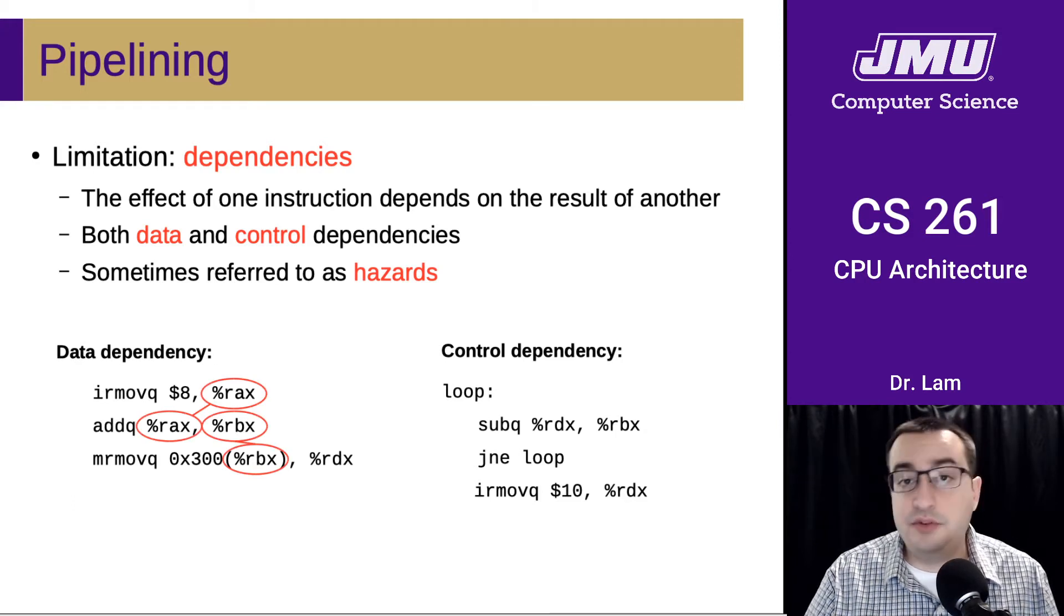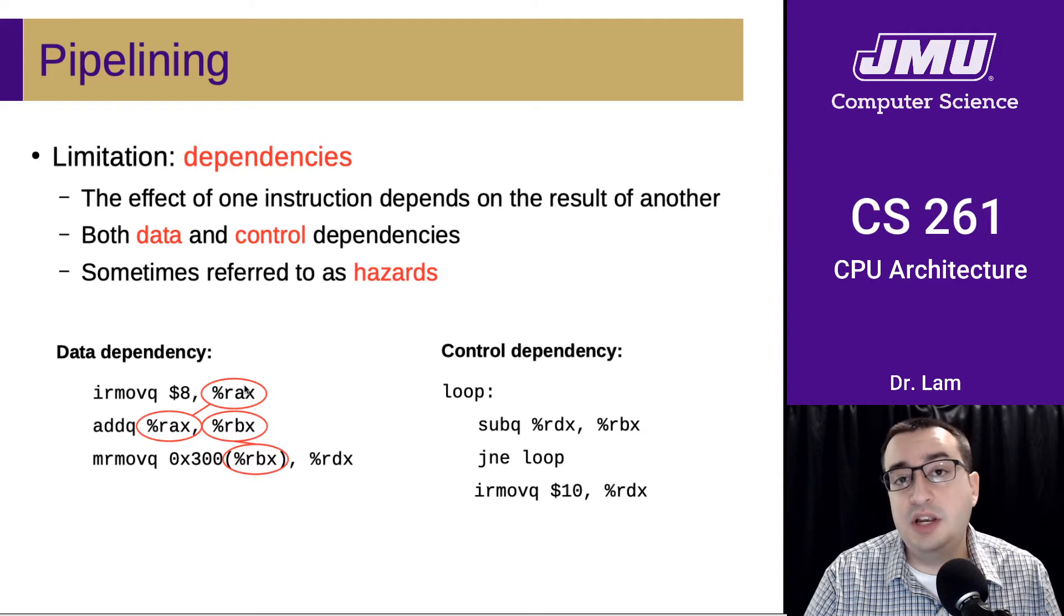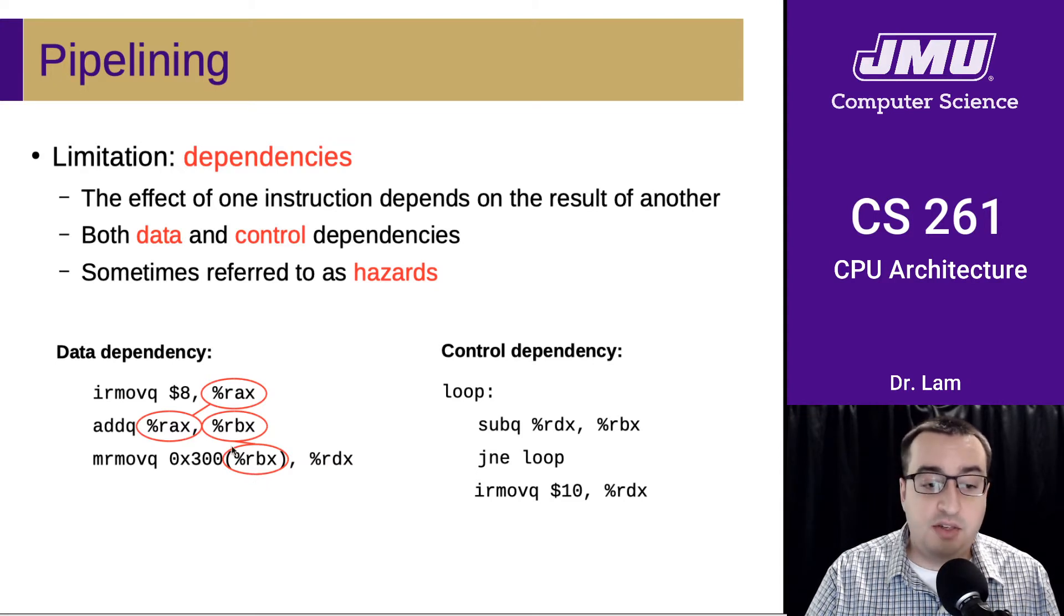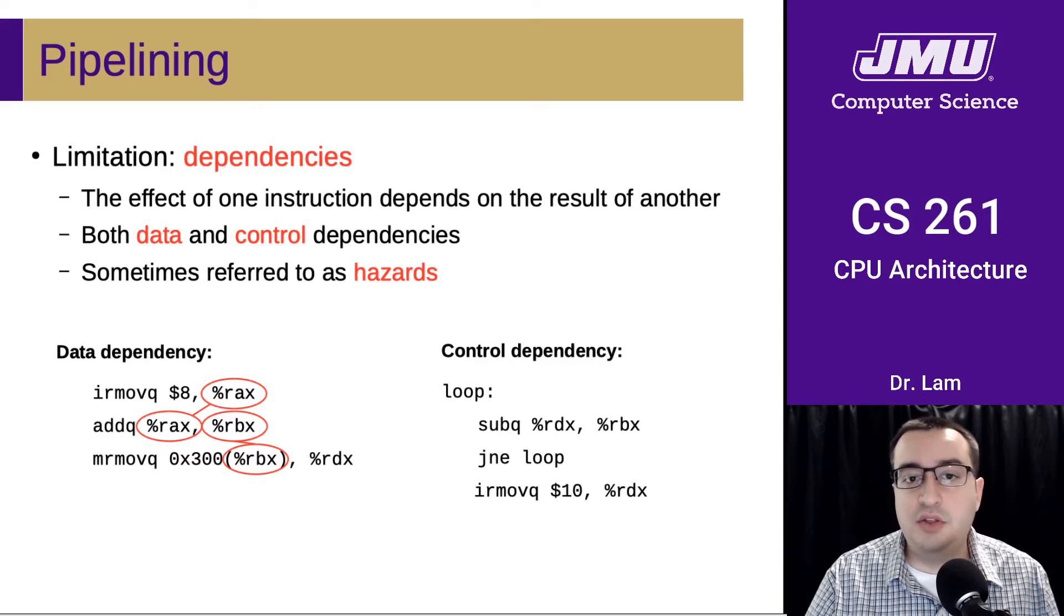Hopefully it's relatively straightforward in this case. Here we need the value of RAX in order to execute this add instruction, but the previous instruction is setting RAX. So we need to know the value of RAX before we can begin executing this instruction. Similarly, we need RBX in order to execute this load. We need the value of RBX, and we won't know that until we finish executing this add instruction. So both of these are data dependencies, and both of these are going to cause problems in pipelining.